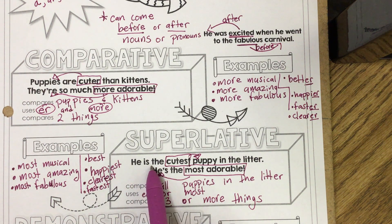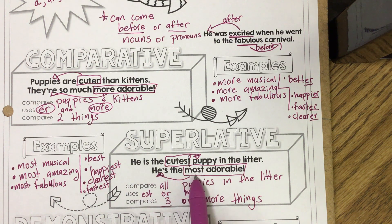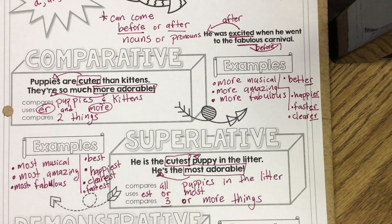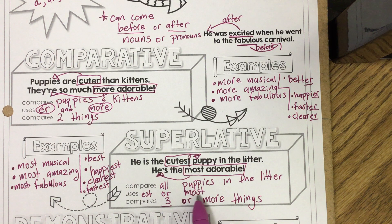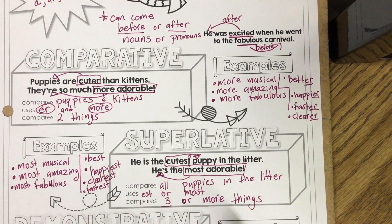In this example, 'cutest' is describing the noun puppy, and 'most adorable' is describing the pronoun. It compared all puppies in the litter using -est at the end or starting with 'most,' and it compares three or more things. Please pause the video to write all of these notes on your paper.